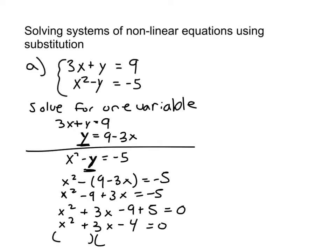What times what equals negative 4, and then if you add them together, you get positive 3? Well, plus 4 and minus 1 will do the trick. So x plus 4, if I set that equal to 0, I get x equals negative 4. And then x minus 1, if I set that equal to 0, I get x equals 1.